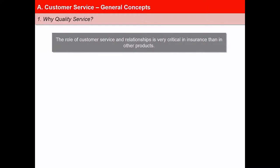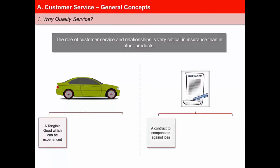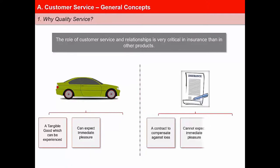The role of customer service and relationships is far more critical in the case of insurance than in other products. This is because insurance is a service which is very different from real goods. Let us understand this by comparing a car with an insurance contract. A car is a tangible good which can be experienced, whereas an insurance contract is a contract to compensate against loss. The buyer of a car can expect immediate pleasure, whereas in the case of insurance, the buyer cannot expect immediate pleasure.